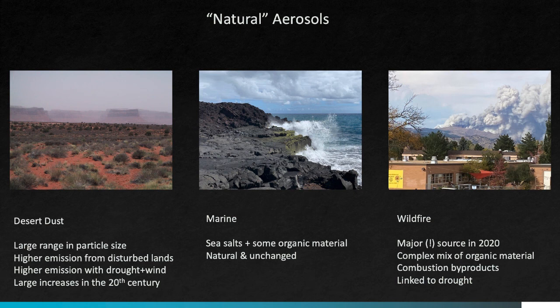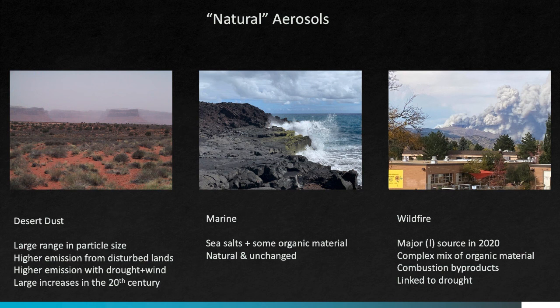The so-called natural aerosols include desert dust, which comes from the erosion of soils but can also be heavily impacted by human use of landscapes and drought — so 'natural' refers to where it's coming from, not whether it's affected by human activity. Marine aerosols are made up mostly of salts with a little organic material mixed in, and are largely unchanged by human activity. Wildfire is a natural source of aerosols, but can be really important — especially in 2020. Wildfire activity in the US has increased as a result of droughts and dryness linked to climate change, so while wildfire is natural, it is also influenced by human activity.